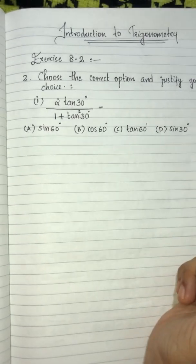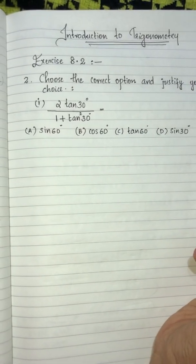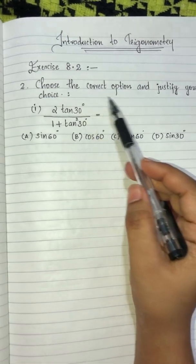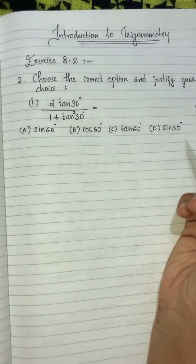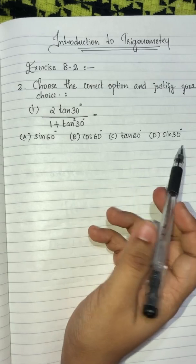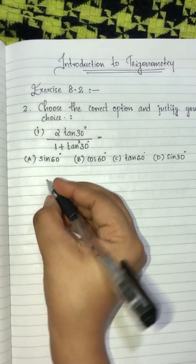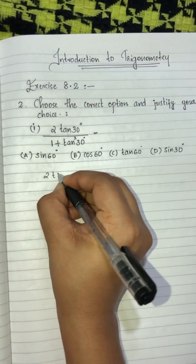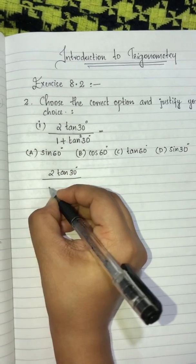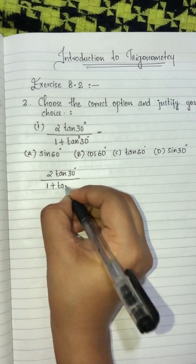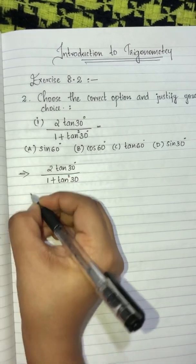Next question: Exercise 8.2 second question. Choose the correct option and justify your choice. We need to solve: 2 tan 30 divided by 1 + tan² 30.